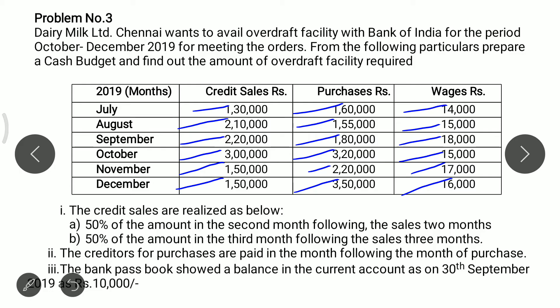Additional information: 50% of credit sales realized in the second month and remaining 50% in the third month following. Creditors are paid in the month following the purchase. Cash balance on 30th September is Rs. 10,000, which is the opening balance for the month of October.